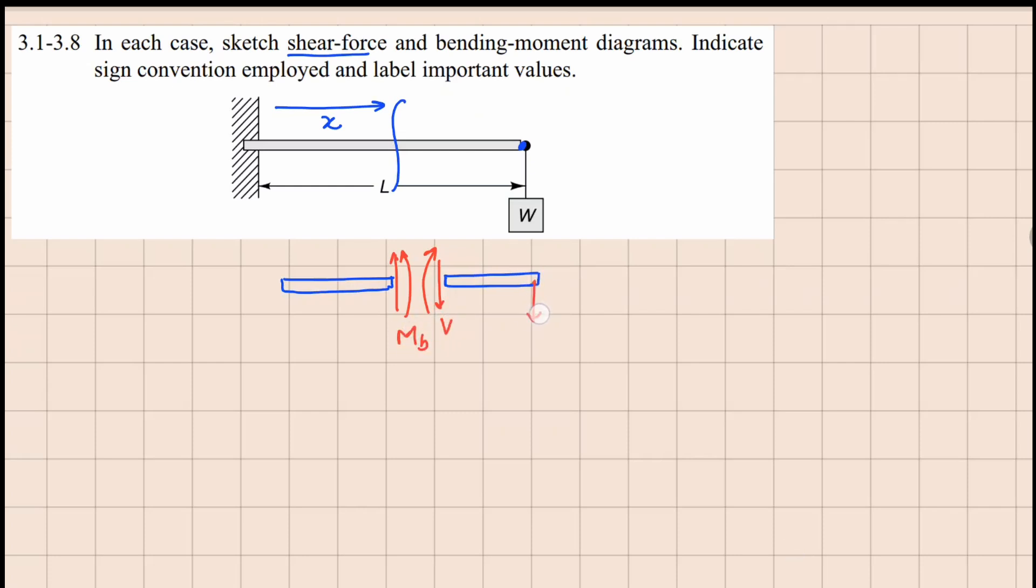And because of this fixed support here, we are expecting a reaction as well as a moment reaction in this manner. Now this distance right here is x, and this one is going to be L minus x. Now looking at these two parts, left one and the right one, it seems easier for us to analyze this one here because we still do not know these reaction forces.